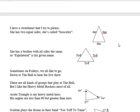I have a sweetheart that I try to please. She has two equal sides; she's called isosceles. She has a brother with all sides the same, so equilateral is his given name.